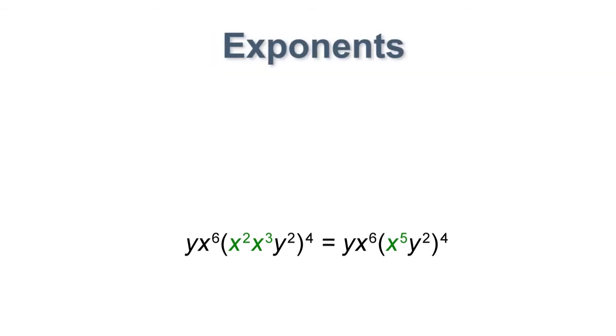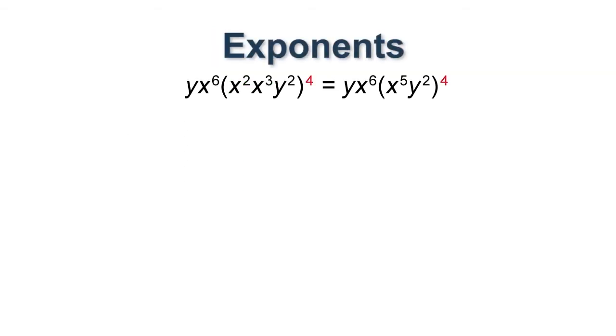Next, let's tackle the exponent outside the parentheses. This exponent means that we multiply the expression in the parentheses by itself four times. We can multiply terms in any order, so that means we can move them around and group all the x's and y's together.